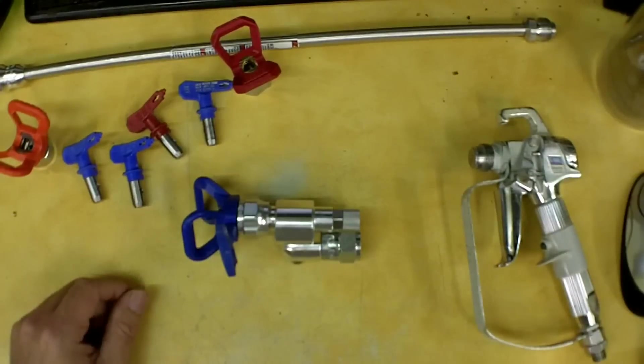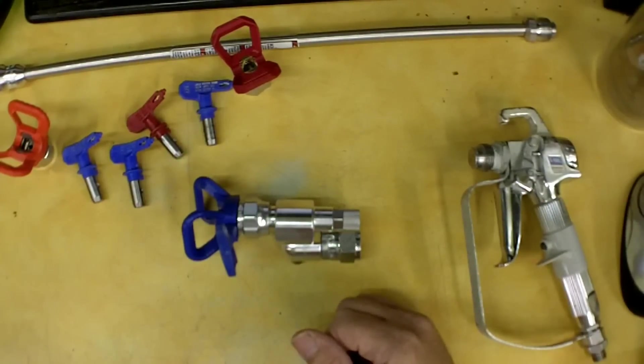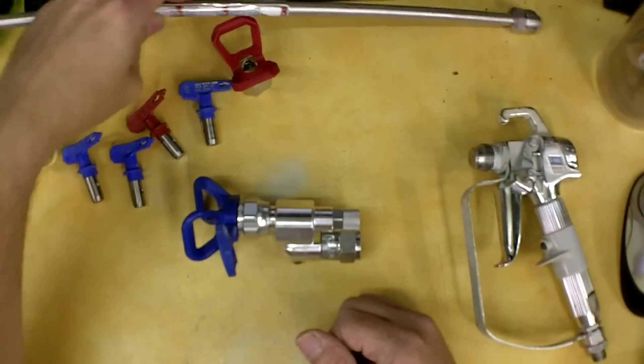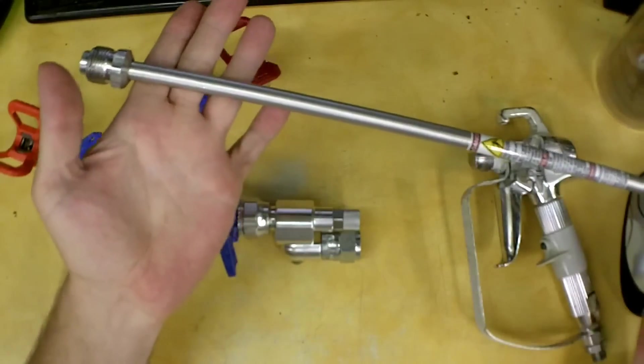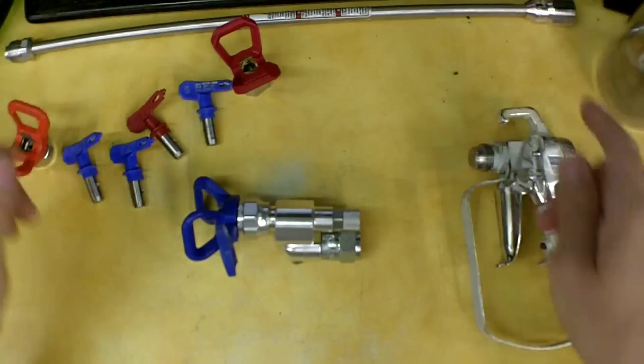But if you're in the middle of a large surface like the side of a house, and you do have to stop because of an obstruction, it's hard to not get it spitting. And it will spit quite a bit with one of these long nozzles.